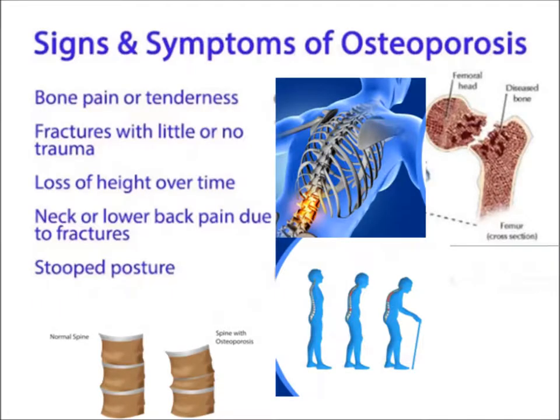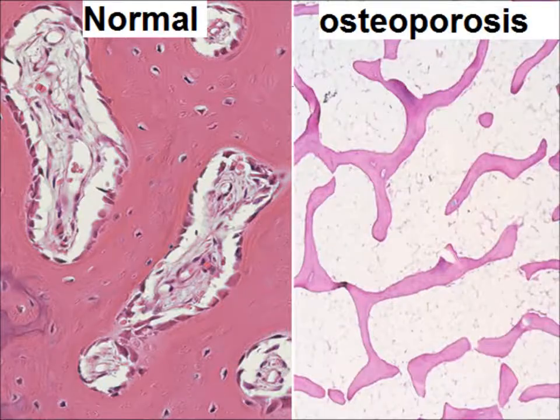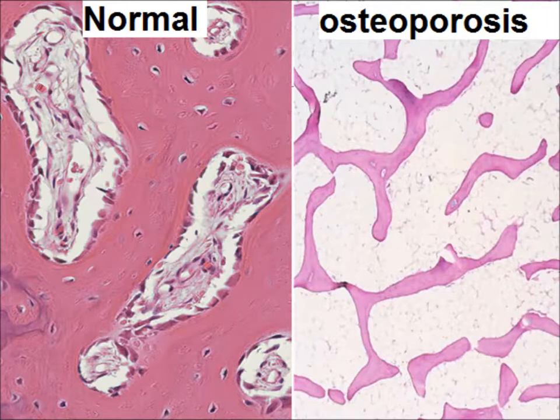The signs and symptoms of osteoporosis include bone pain or tenderness, fractures with little or no trauma, loss of height over time, neck or lower back pain due to fractures, and stooped posture. Compressed vertebrae lead to stooped posture. Normally there is thick cancellous bone, but in osteoporosis there are thin trabeculae.